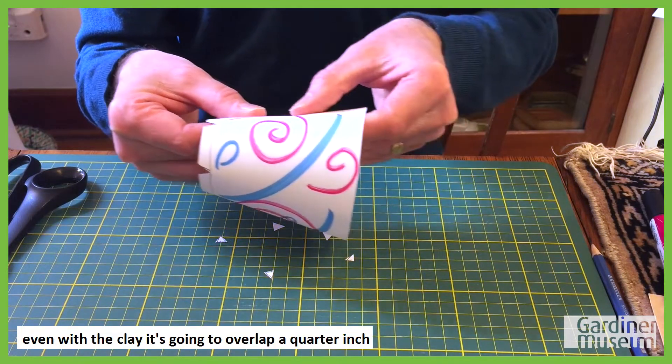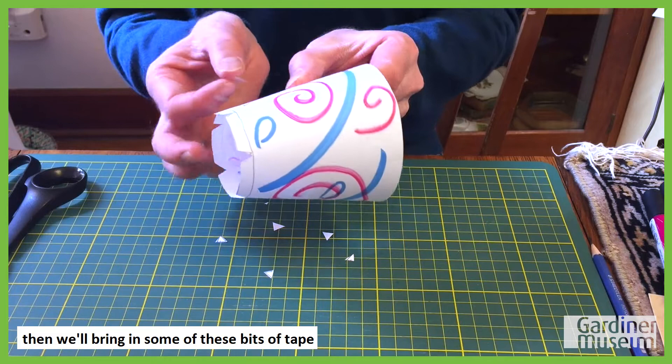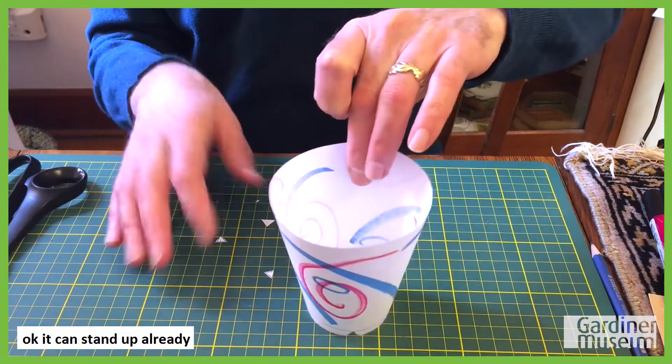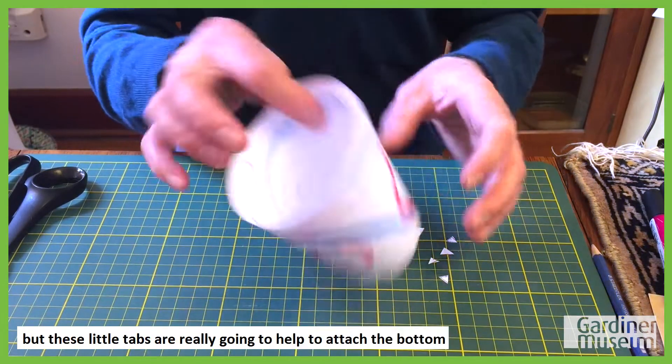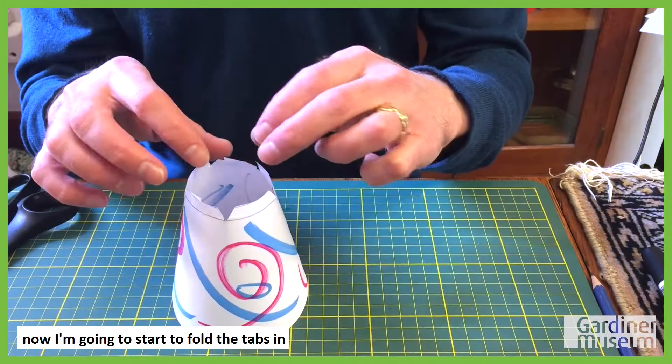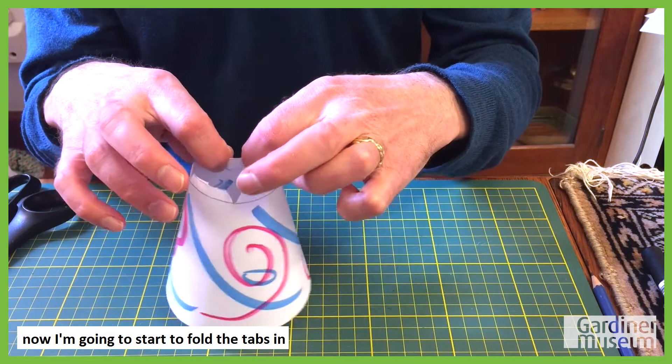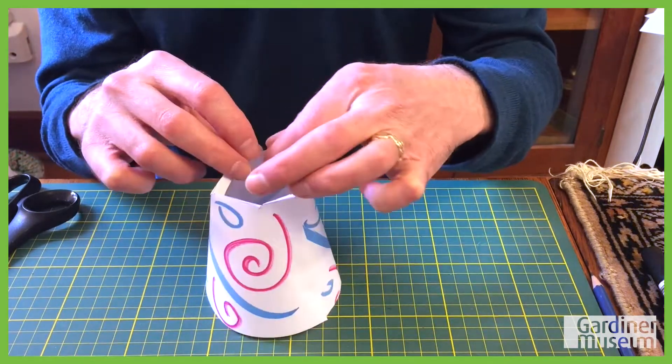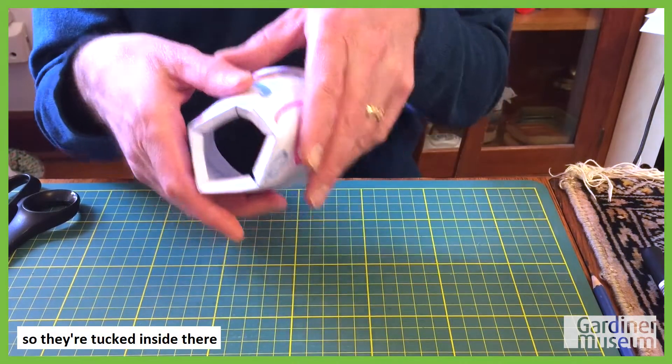Even with the clay, it's going to overlap a quarter inch. Then we'll bring in some of these bits of tape. And it can stand up already. But these little tabs are really going to help to attach the bottom. Now I'm going to start to fold the tabs down. So they're tucked inside there.